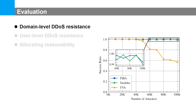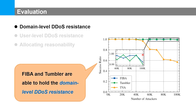To evaluate domain-level DDoS resistance, we compare FEBA with two relevant approaches. As the number of bots increases, FEBA and TAMBLER can maintain the bandwidth guarantee of the bottleneck link for legitimate ASes, while the curve for TVA shows a descent. Note that the slight fluctuation of FEBA and TAMBLER results from natural packet loss. So FEBA and TAMBLER are both able to maintain domain-level DDoS resistance.